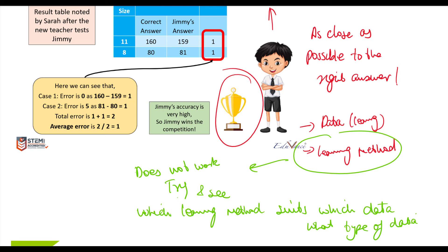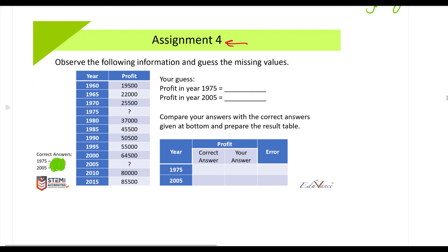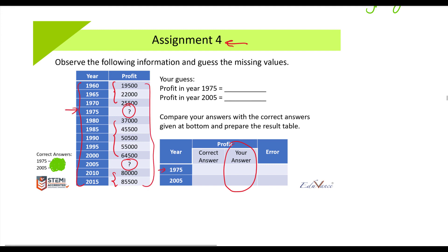Before I end this lecture, I will leave you with a small exercise. Let's say I have data for a company where one column has the year and the second column has the profit for that company. Based on this data, can you guess the profit for the year 1975 and 2005? Please pause this lecture right here and try — go through these data points and see if you can predict the profit numbers for 1975 and 2005.